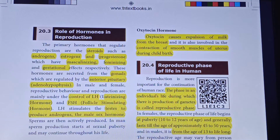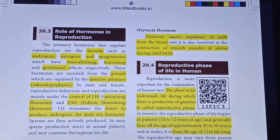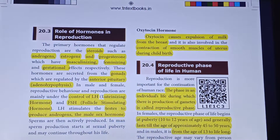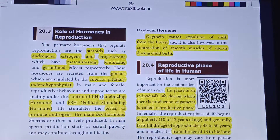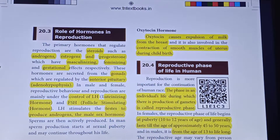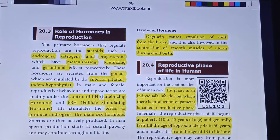Hi students, this is your science miss. In this session, we are going to continue unit 20 - Reaching the Age of Adolescence, Part 2. Here in this part, we are going to see about the role of hormones in reproduction.